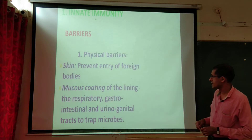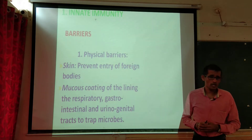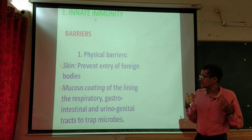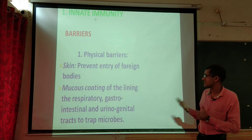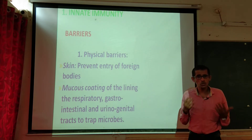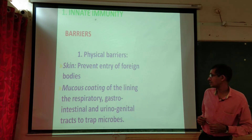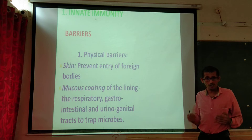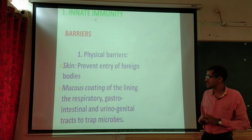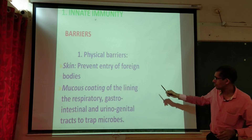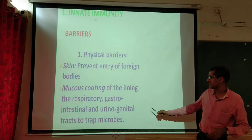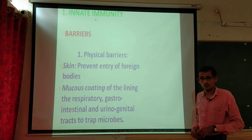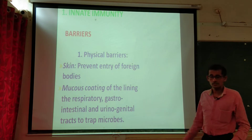Under the physical barrier, the first one is the skin. Skin is the outermost layer of our body and prevents the entry of foreign bodies — that is, pathogens — directly. The second one is the mucus coating of the lining of the respiratory, gastrointestinal, and urogenital tract, which traps microorganisms or pathogens.